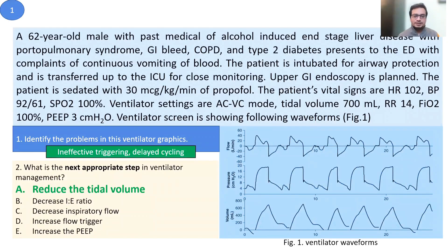To reduce the ineffective triggering, we can increase the peak flow rate and decrease the inspiratory time. Multiple options may be correct, but with a higher flow rate the ventilator will be able to cycle off early to deliver the higher tidal volume. However, the most appropriate answer — as many rightly answered on my Facebook post — is reducing the tidal volume, because the current large tidal volume is not lung-protective and might cause more lung damage.